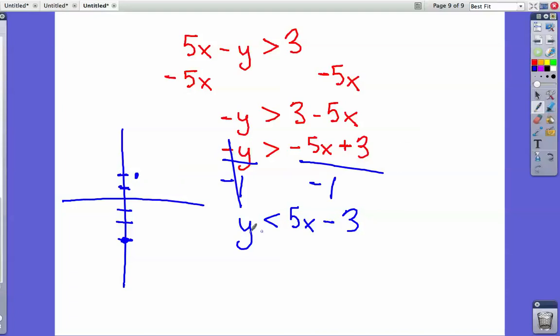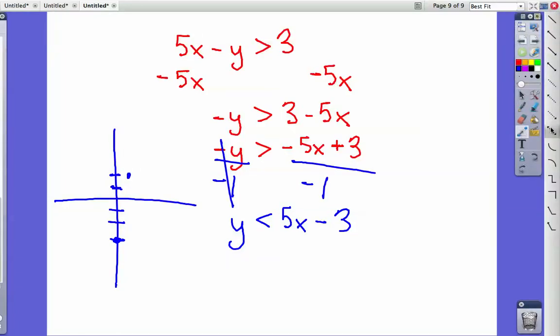And then we draw, this time, it's still not equal to, it's just less than. So we have to take our dotted line again and draw a line through both of those points.